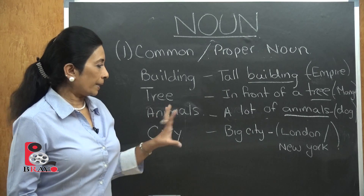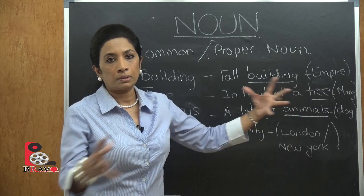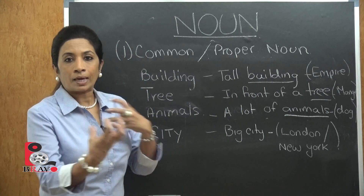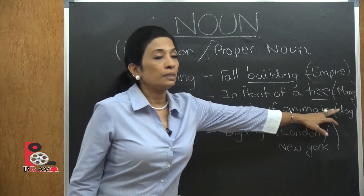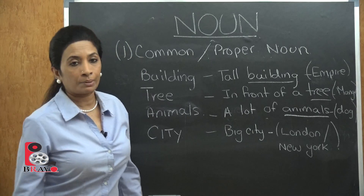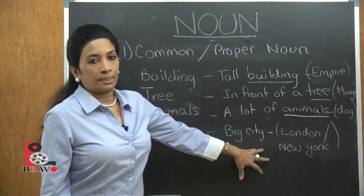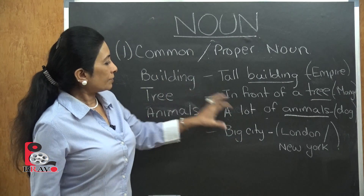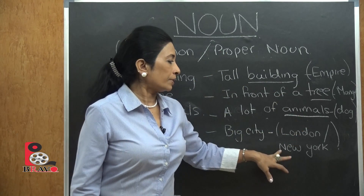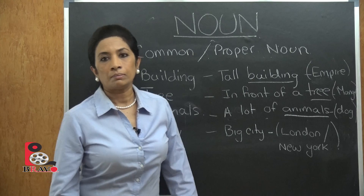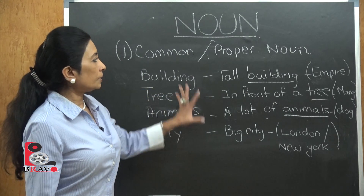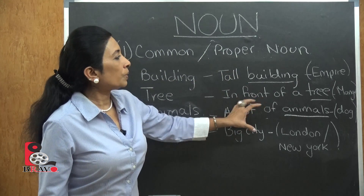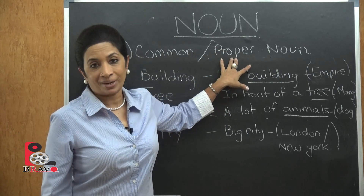For animals, a common noun is just 'a lot of animals standing together.' To specify a proper noun, you name the animal — 'dog' or 'cat.' For city, a common noun is 'big city,' but the proper noun gives it a name, for example London or New York. So the difference between common and proper noun is that the same common noun is addressed with a specific name to become the proper noun.